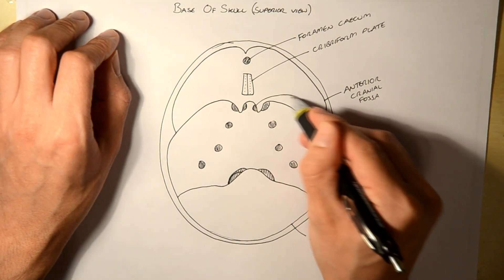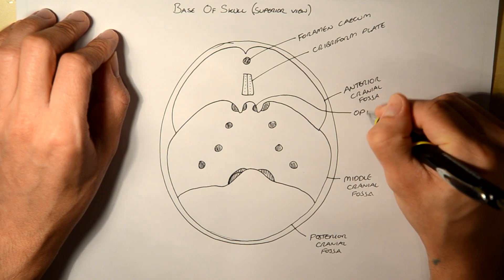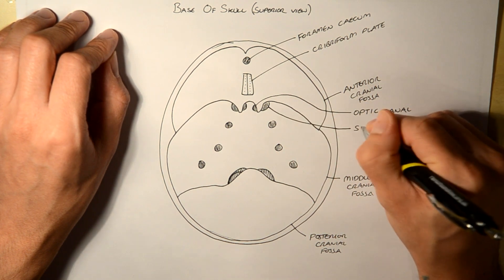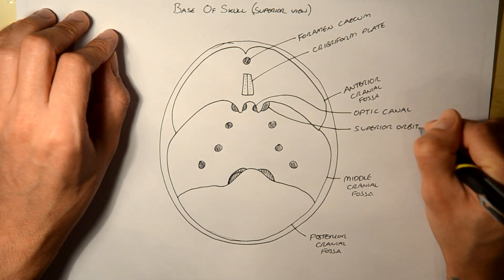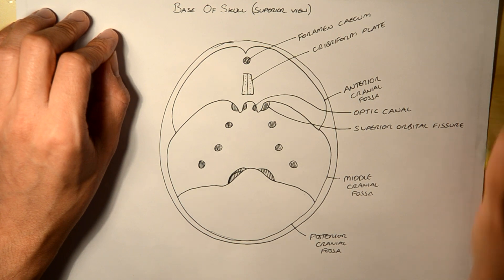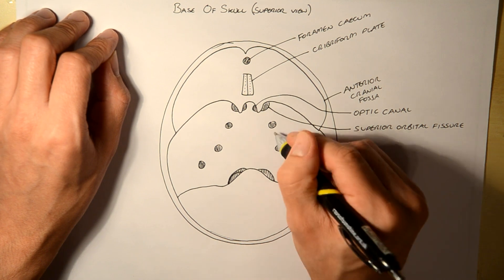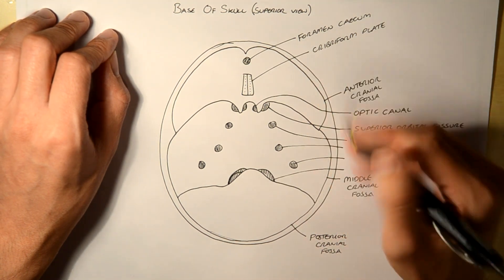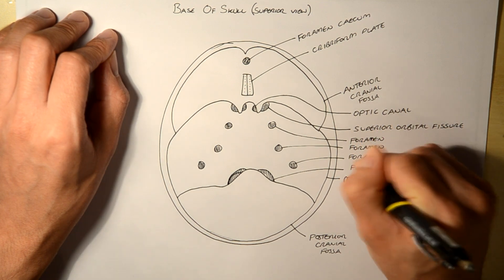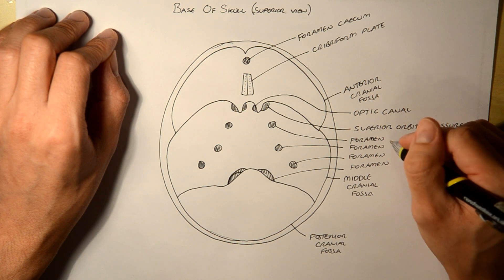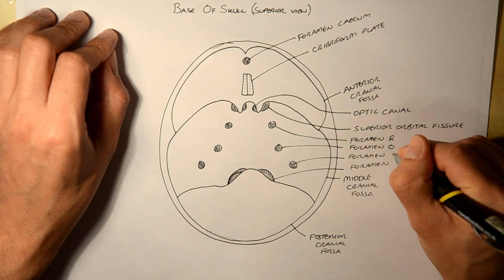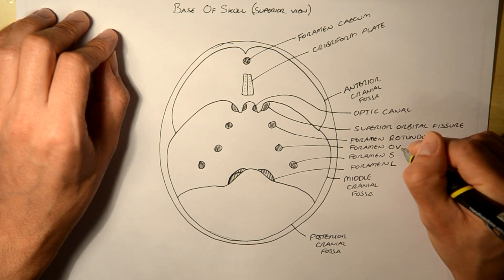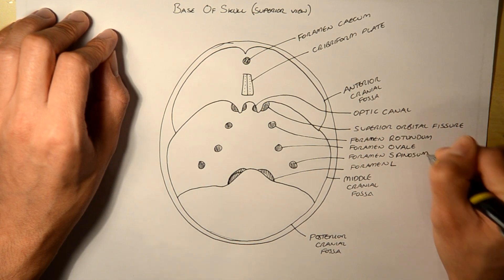Okay, so firstly here, this is the optic canal. Superior orbital fissure. And next, we've got these four. The easiest way, I think, is to divide them into four. So one, two, three, four. Remember that they're all foramen. Remember rolls on full laughing? Well, I've got one that's probably not going to catch on. Rolls on side laughing. So foramen rotundum, foramen ovale, spinosum, and foramen lacerum.